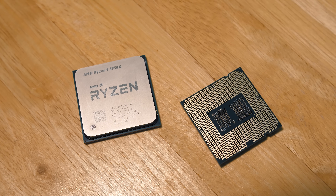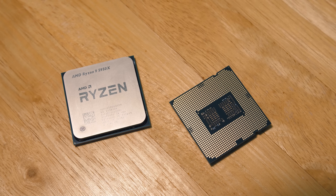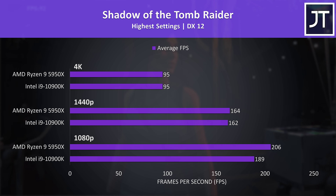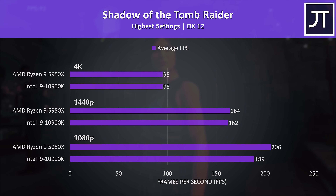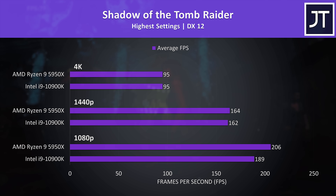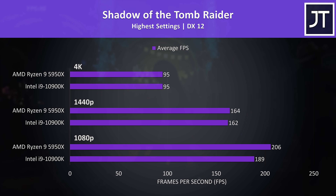Let's check out gaming performance next — I've tested 10 games at 3 resolutions. Shadow of the Tomb Raider was tested with the game's benchmark tool. There was no difference between the two processors at 4K, which makes sense as we're more GPU bound at higher resolutions. The 5950X was just a couple of frames ahead at 1440p, and it had a 9% lead at 1080p, so definitely beating Intel's best gaming chip.